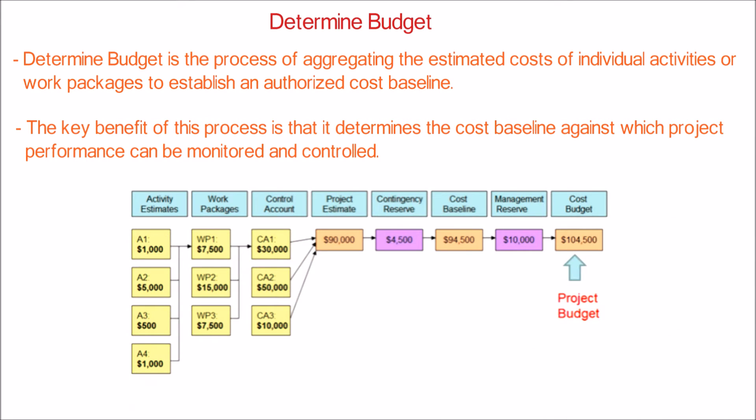Here is the example for calculating the budget. For calculating the budget, we will travel from left to right. Here we have four individual activities A1, A2, A3, and A4 that are part of the work package WP1. Adding up the individual activity costs — $1,000, $50,000, $500, and $1,000 — we can estimate the cost of WP1 is $7,500.